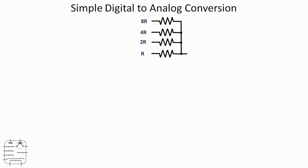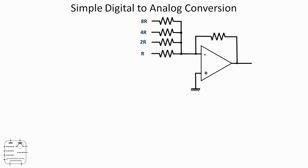That current isn't a great deal of use to us initially, so we need to convert it into a voltage. The easy way to do that is to use an op-amp in inverting configuration — refer to previous videos for how that works. The output voltage of the op-amp should be proportional to the current flowing at the inverting input, and there we've got a really simple four-bit digital to analog converter.